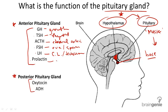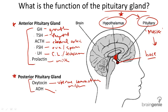Prolactin is only released after childbirth and stimulates the mammary glands to produce breast milk. In the posterior pituitary gland, oxytocin stimulates the uterus to contract during childbirth, and also causes the mammary glands to release milk for breastfeeding. Antidiuretic hormone, or ADH, targets the kidneys and is also known as vasopressin. Its function is to cause the kidneys to prevent water loss.